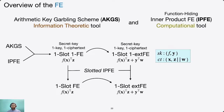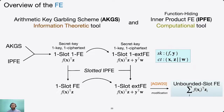We then use the AGW20 transformation with a small modification to obtain our unbounded slot FE scheme with adaptive simulation security. In our one-slot FE scheme, the adversary can query any polynomial number of secret keys both before and after the challenge ciphertext. In our unbounded slot scheme, the adversary can query a priori bounded secret keys before the challenge ciphertext and any polynomial number after.